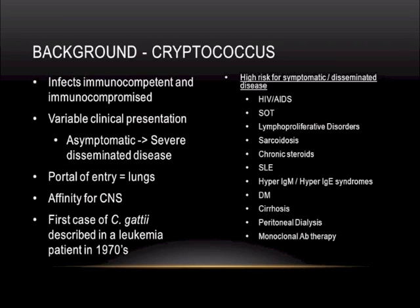For both neoformans and gattii, there can be a variable clinical presentation from asymptomatic disease to severe disseminated disease. For both, the main portal of entry is the lungs, and there is an affinity for the central nervous system, causing meningitis primarily. The first case of Cryptococcus gattii was described in a leukemic patient in the 1970s, when it was previously classified as a variety of Cryptococcus neoformans.